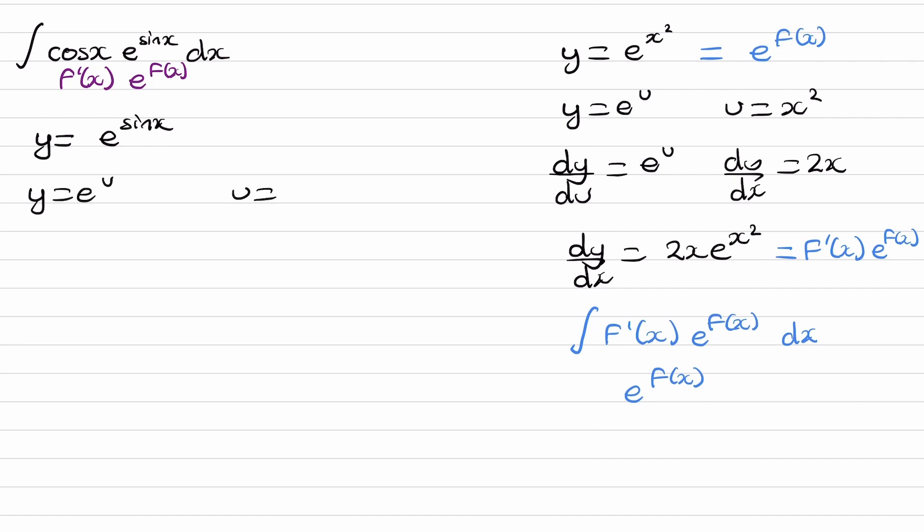Differentiate this. Use the chain rule. So, dy/du is this. Sine x differentiates to make cos x. Times the two things together.